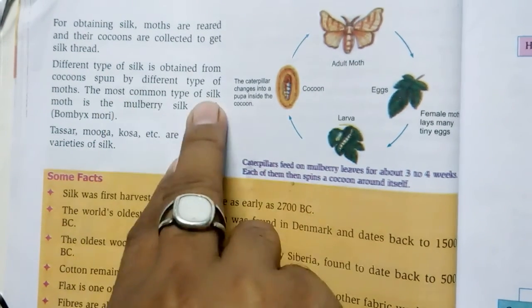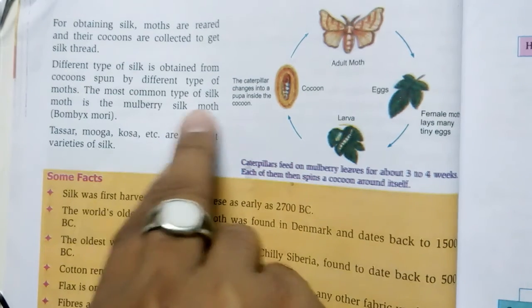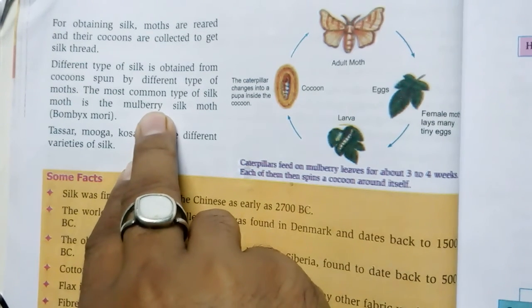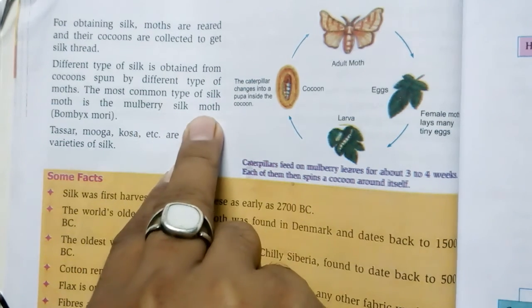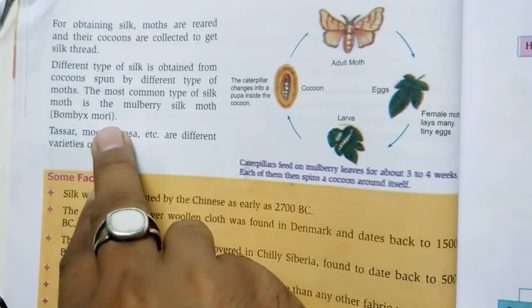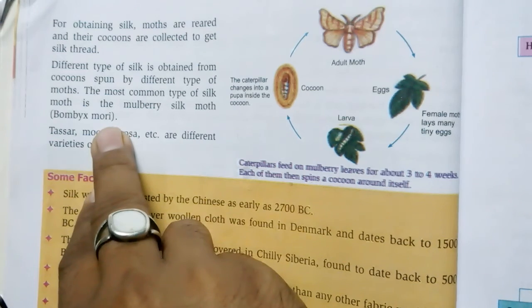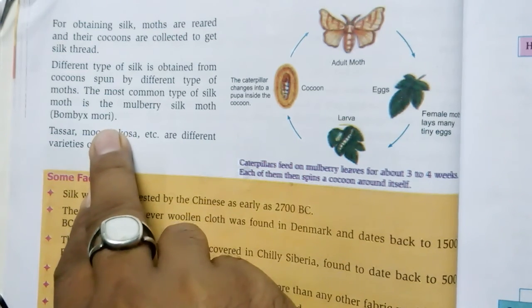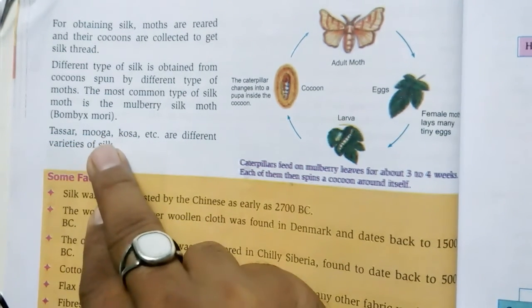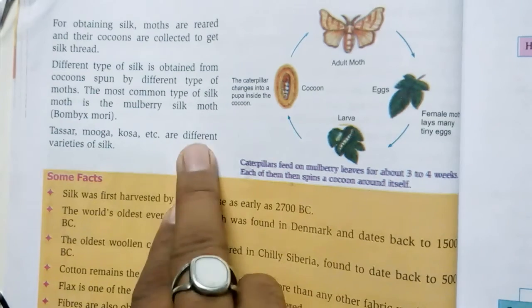The most common type of silk moth is the mulberry silk moth, known as Bombyx mori. Other varieties include Tassar, Muga, and Kosa.